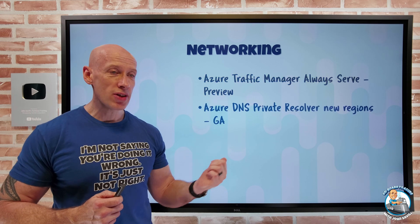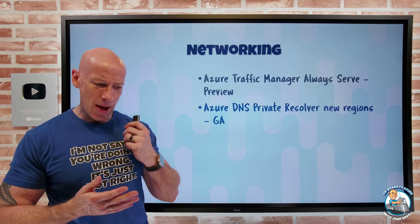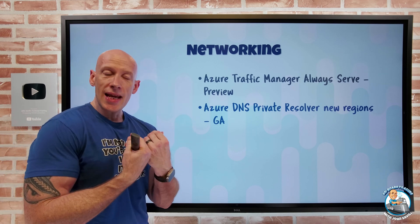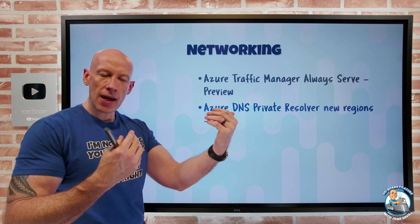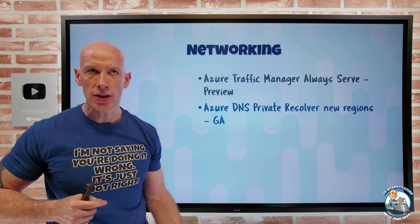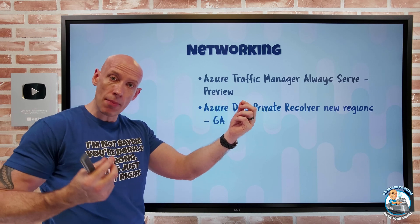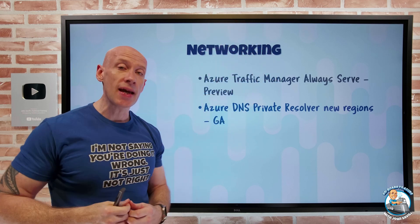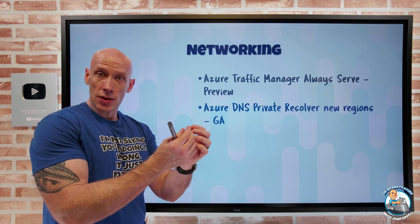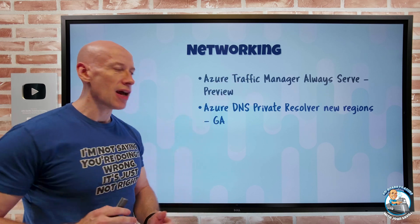Azure DNS Private Resolver is now available in new regions: West US, Canada East, Qatar Central, UAE North, Australia Southeast, Norway East, and Poland Central. The Private DNS Resolver creates an IP address in your VNet that is routable and addressable, so from on-premises you can forward requests to that IP and resolve things against Azure DNS, like the contents of private DNS zones. It also lets you configure forwarding for certain domains so that when you query Azure DNS it forwards the request to a custom DNS server you specify.